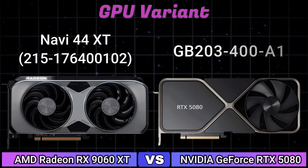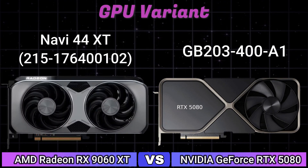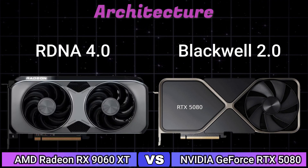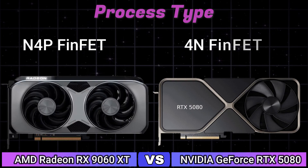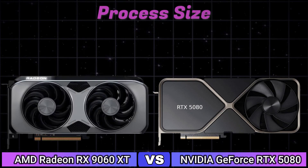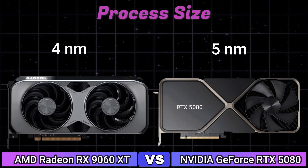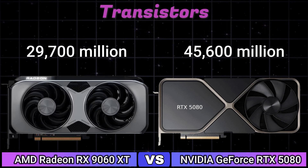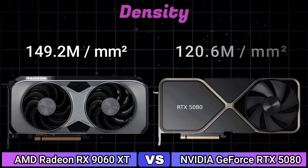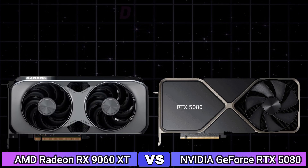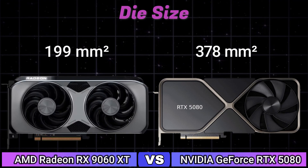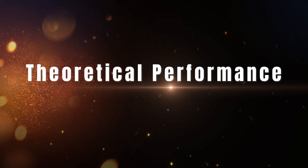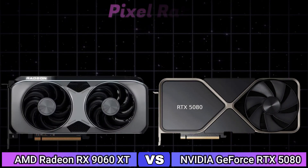GPU variant, architecture, process type, process size, transistors, density, die size, pixel rate.